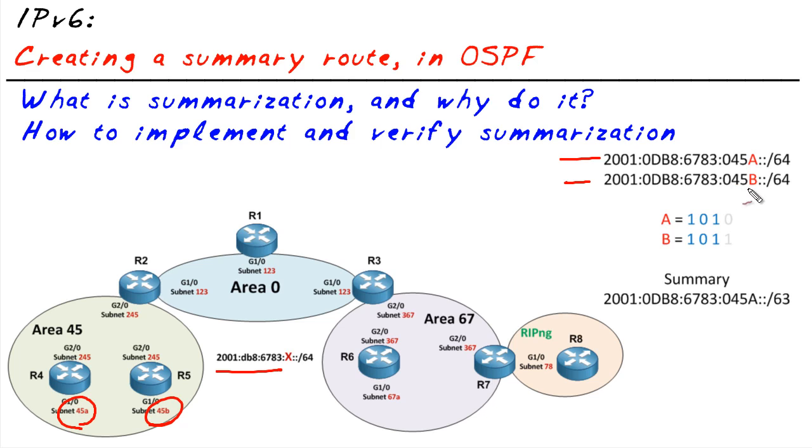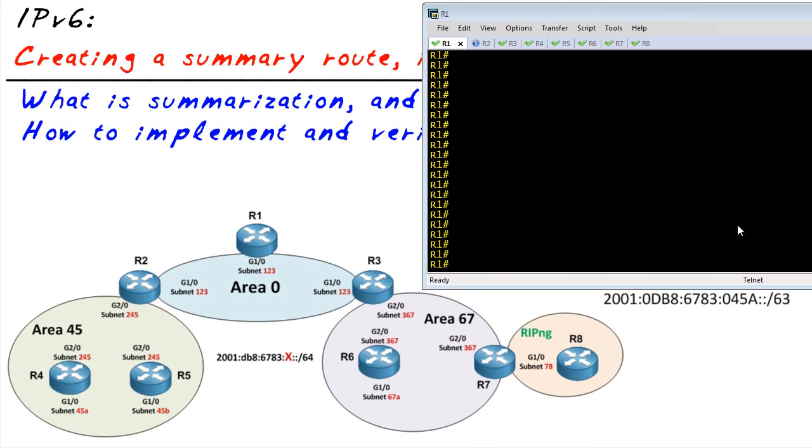If we looked at R1's routing table, which we should do right now, we're gonna see that it has both of those routes - both of those 64-bit routes in it. Let's take a quick peek at that right now.